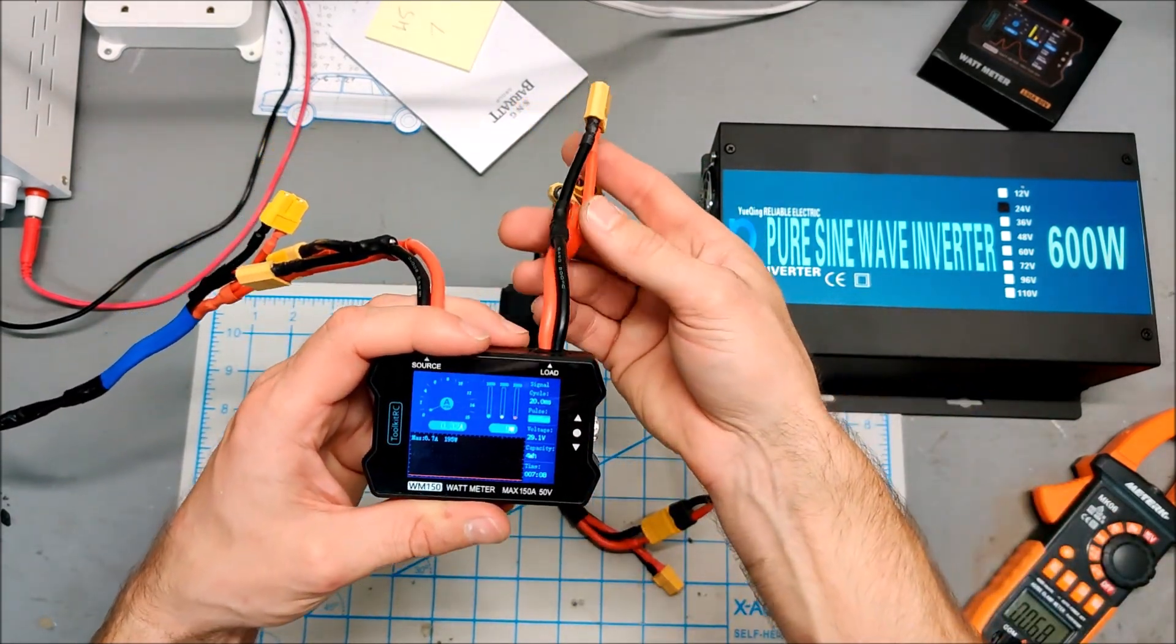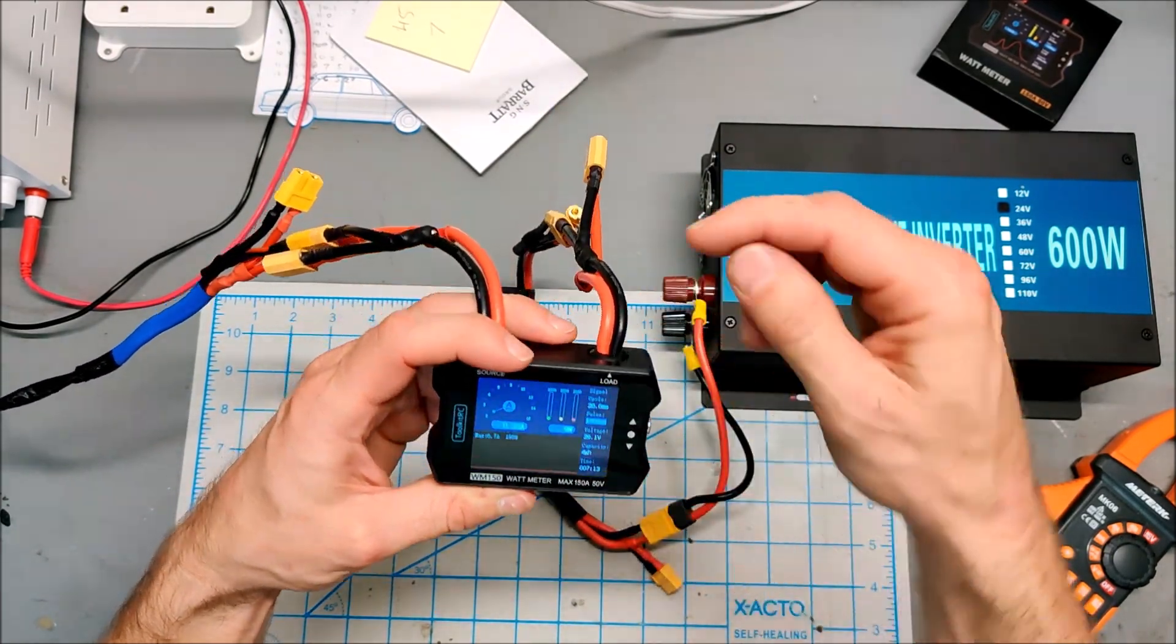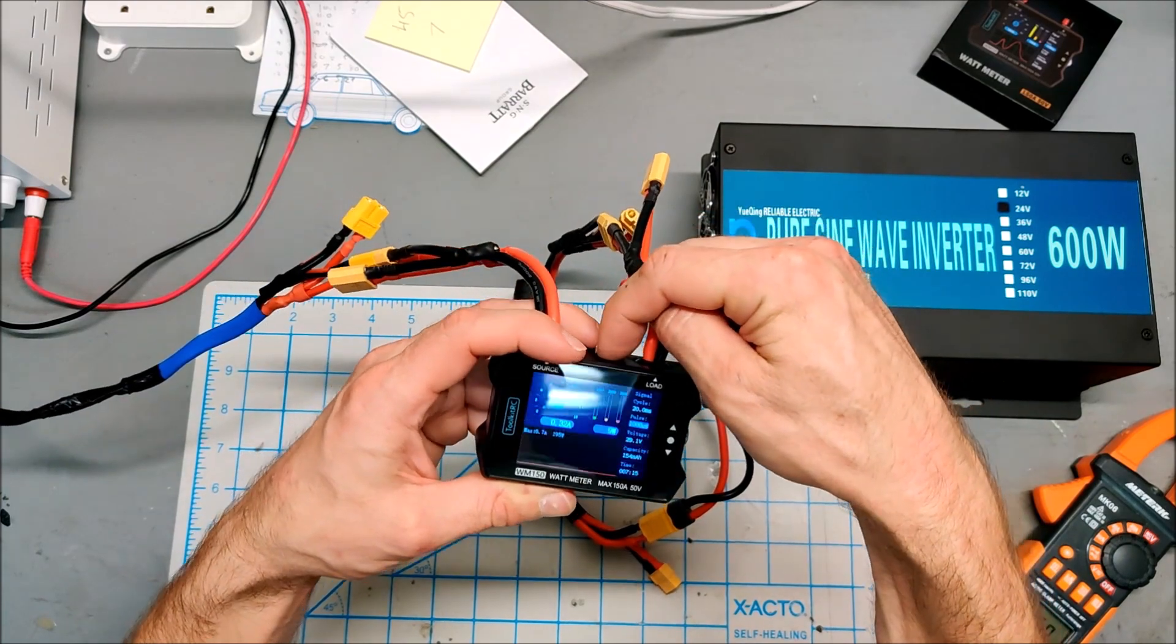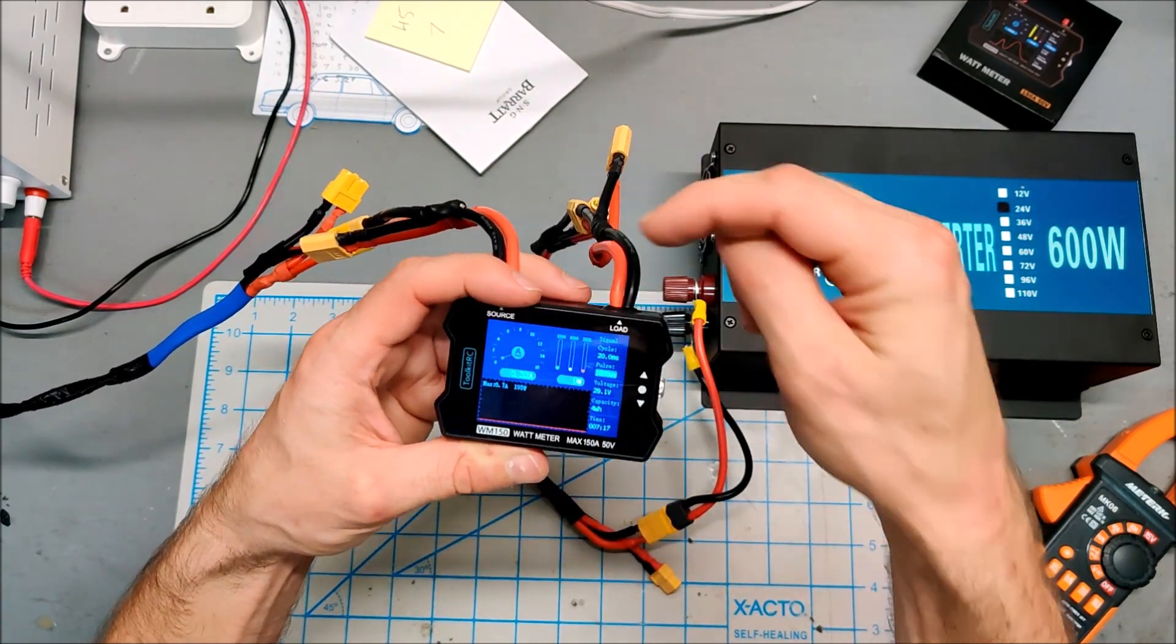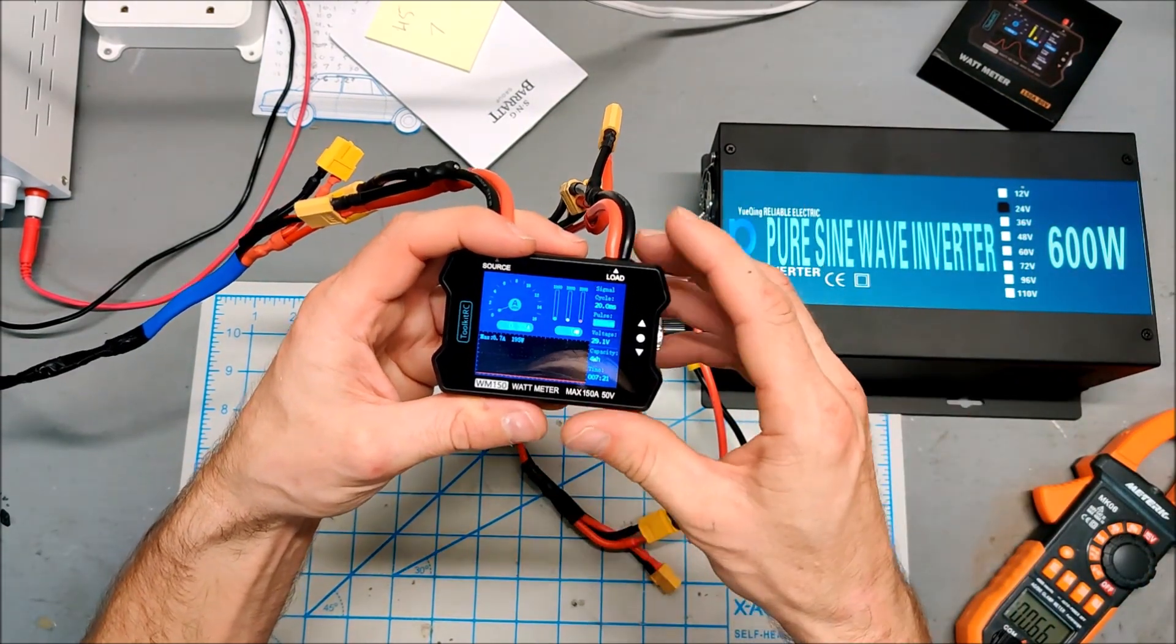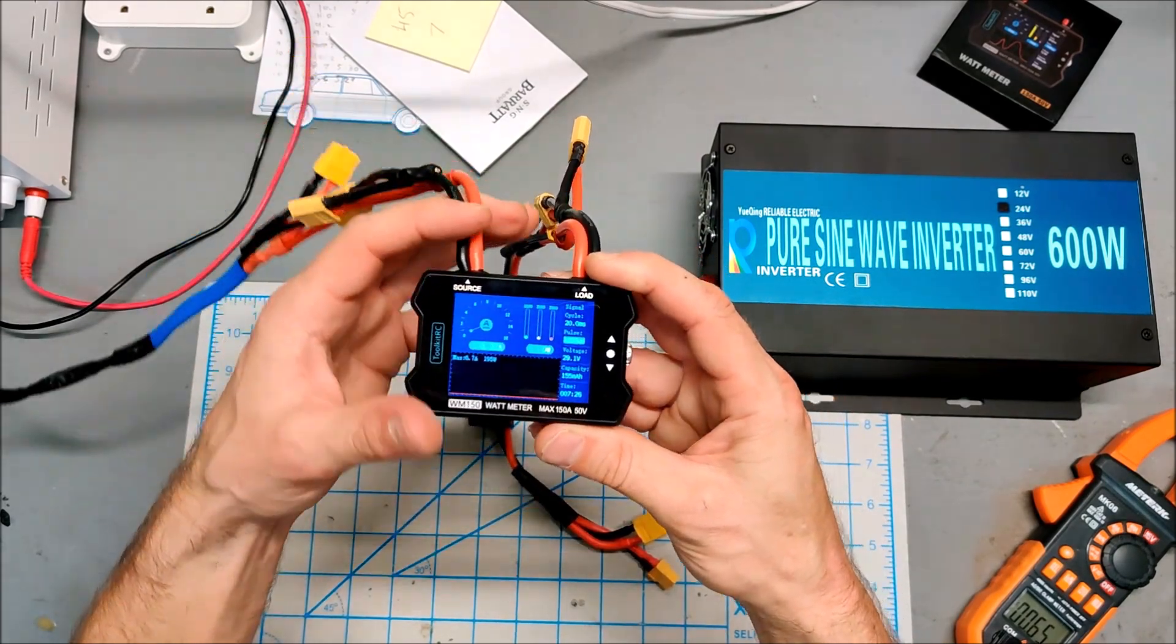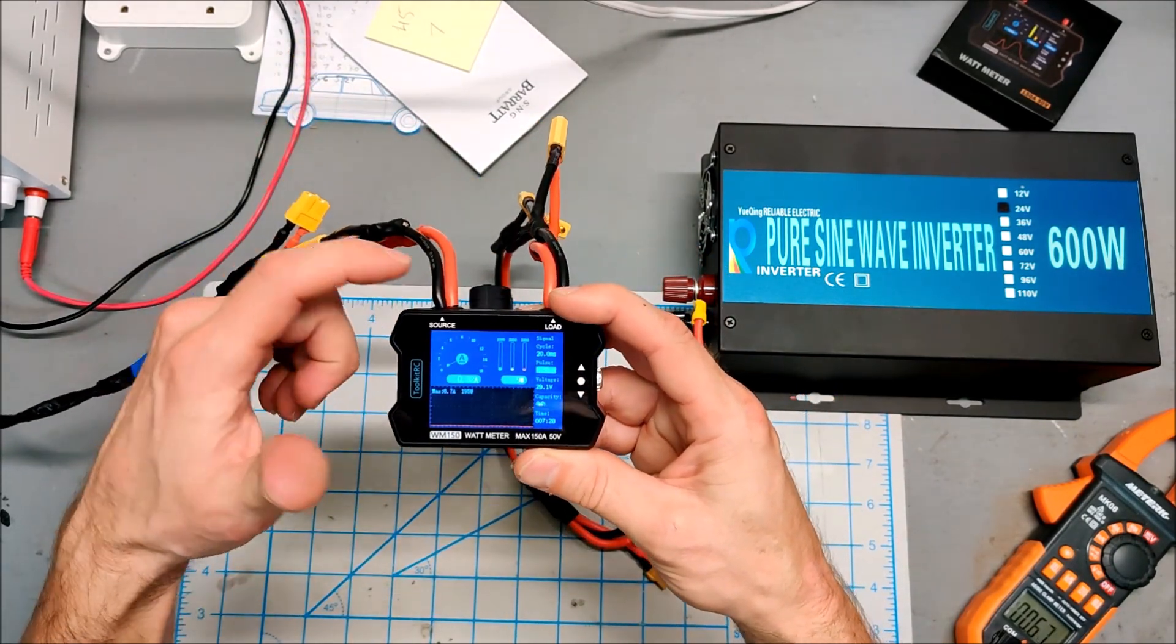But the meter is accurate. It's rated up to 150 amps at 50 volts. If you use this for below 6 volts, you actually use the USB to power it. But above 6 volts to 50 volts, it is self-powered and it just gets its power right off the incoming source power.